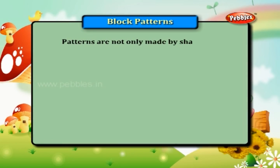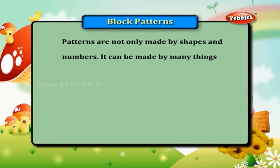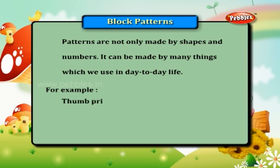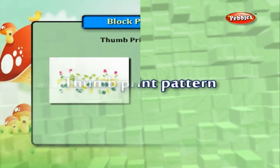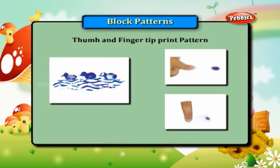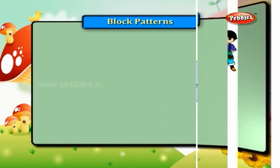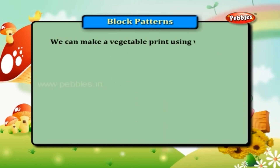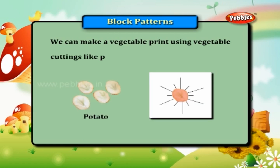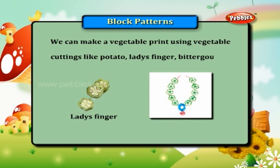Patterns are not only made by shapes and numbers — they can be made by many things we use in day-to-day life. For example, thumb printing and vegetable printing. Block patterns are made by repeating the same motif again and again. We can make a vegetable print using vegetable cuttings like potato, lady's finger, and bitter gourd.